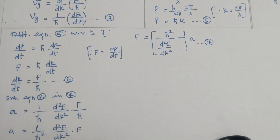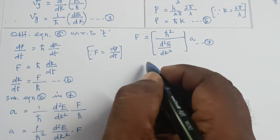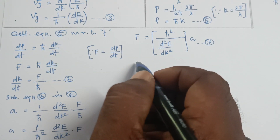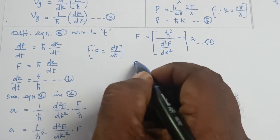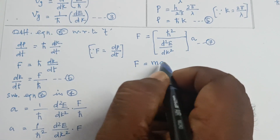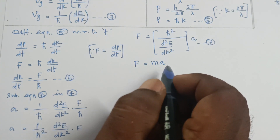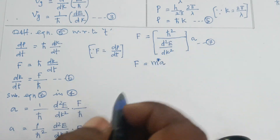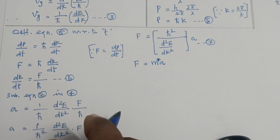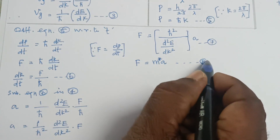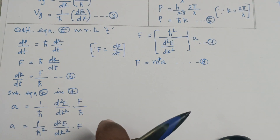When applying an external electric field, the acceleration of the electron in this field, according to Newton's second law, gives F = ma. Here the mass of the electron is the effective mass, so F = m*a. This is equation 8.